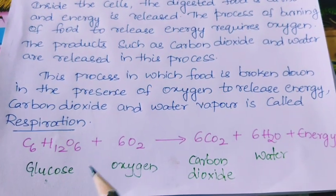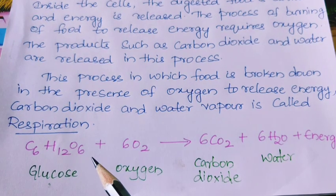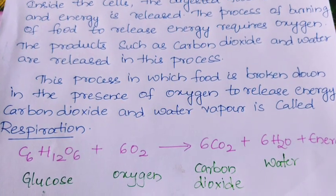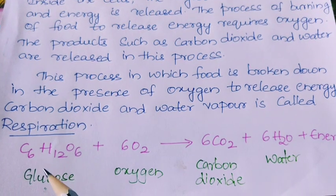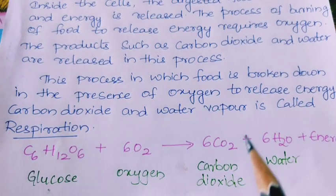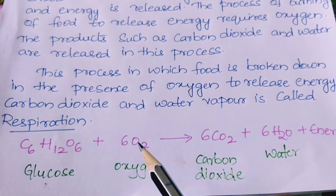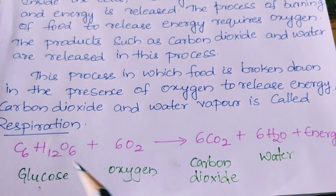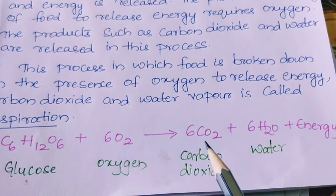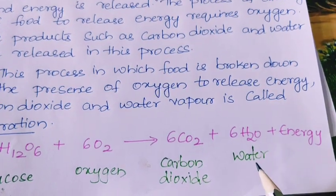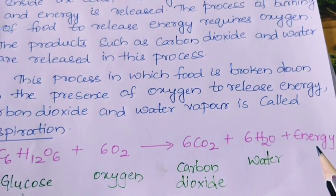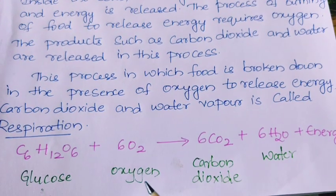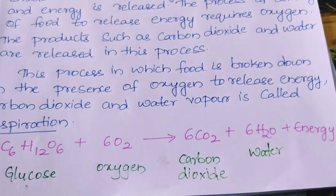This can also be seen in the form of an equation: C6H12O6 — that is glucose — plus 6O2 — oxygen — yields CO2 (carbon dioxide) plus water plus energy. So the food we consume is converted into glucose, and glucose in the presence of oxygen is converted into carbon dioxide, water, and energy. This equation represents the process of respiration.